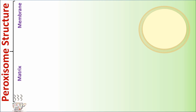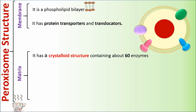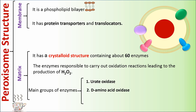Proxysome Structure. Proxysome has two parts in its structure: membrane and matrix. The membrane is a phospholipid bilayer with protein transporters and translocators. The matrix has a crystalloid structure containing about 60 enzymes. The enzymes are responsible for carrying out oxidation reactions leading to the production of H2O2. Main groups of enzymes include urate oxidase, D-amino acid oxidase, and catalase.